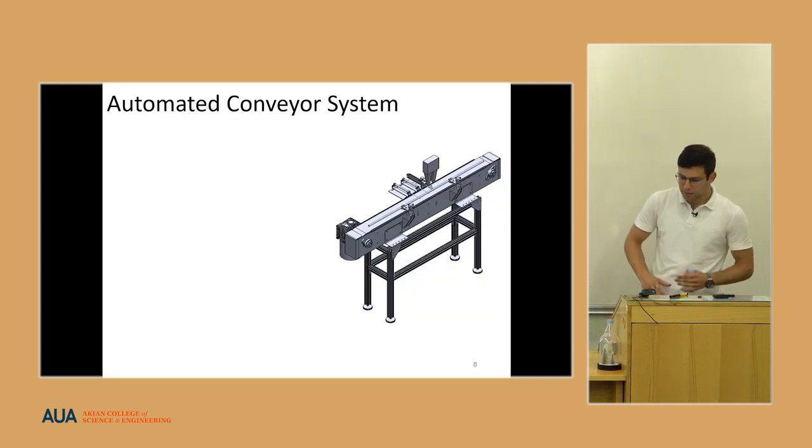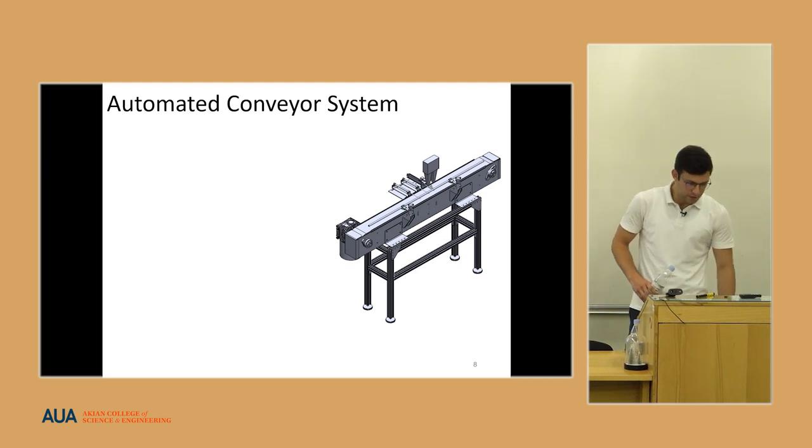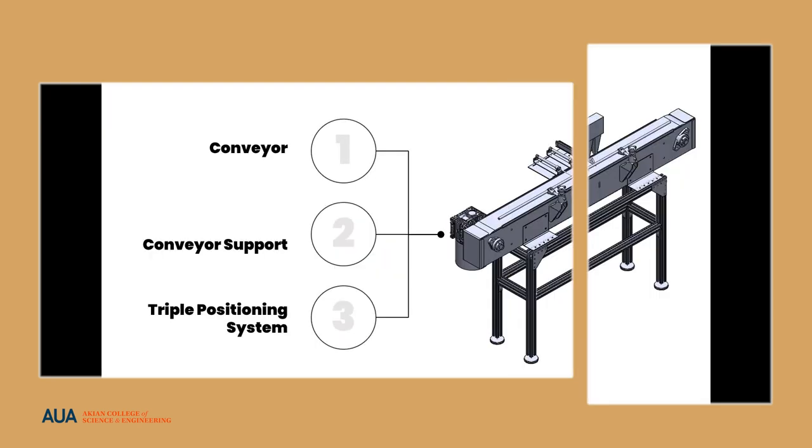Let's break down some essential components of this automated conveyor system. The first one is the conveyor itself, the support structure which holds the conveyor on it, and the triple positioning system here which is the main component for the automation.